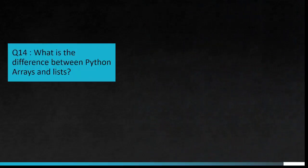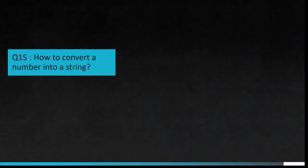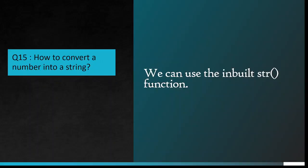Question number 14: What is the difference between Python arrays and lists? Arrays and lists in Python have the same way of storing data. But arrays can hold only a single data type elements, whereas lists can hold any data type elements. Question number 15: How to convert a number into a string? We can use the inbuilt str() function.